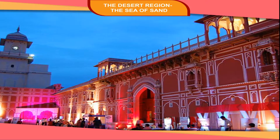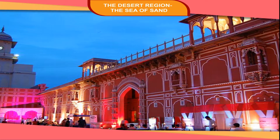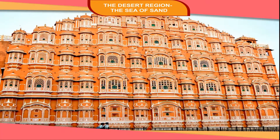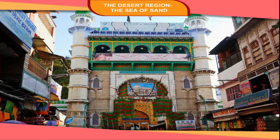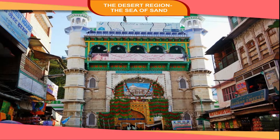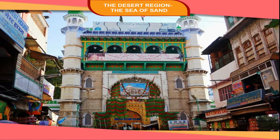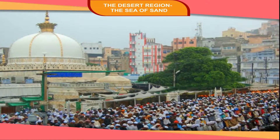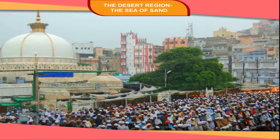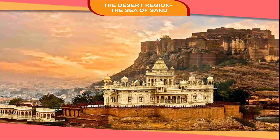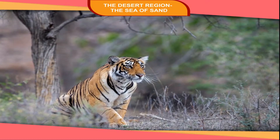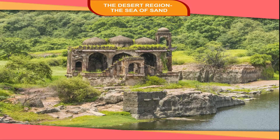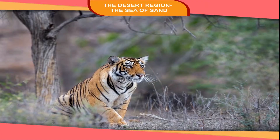Jaipur, the capital of Rajasthan, is known as Pink City. The Hawa Mahal and Amber Fort are located here. The famous holy place of Muslims, Ajmer Sharif, is also in Rajasthan. People of other religions also visit there to show their faith in God. Jodhpur and Udaipur are other famous places of historical importance. The Ranthambore National Park near Sawai Madhopur is famous for tigers.